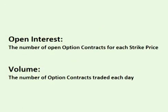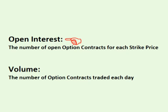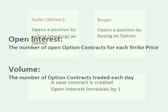Open Interest is often confused with volume. Volume is the number of contracts traded each day, whereas Open Interest is the number of contracts that are currently open.